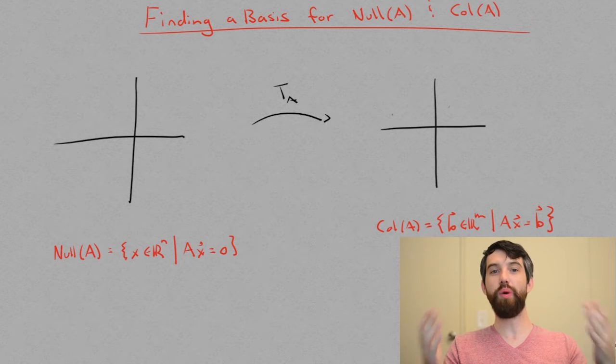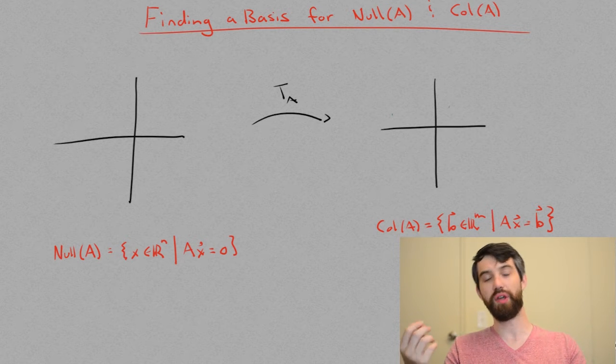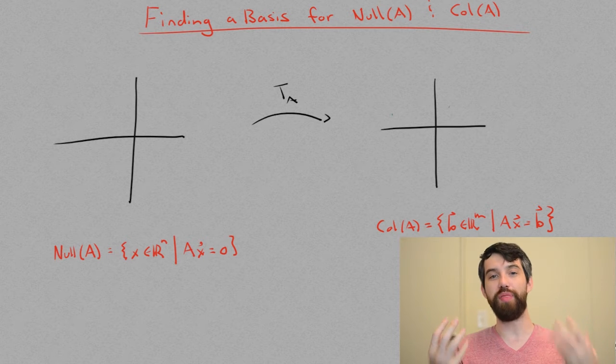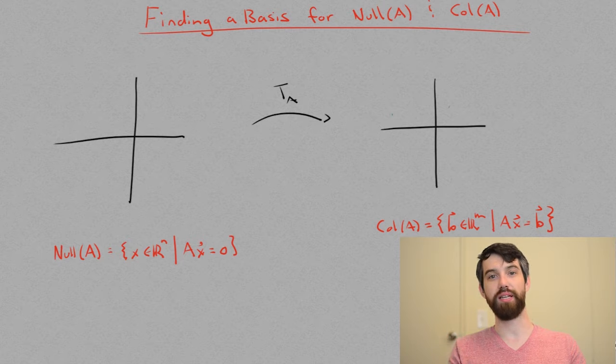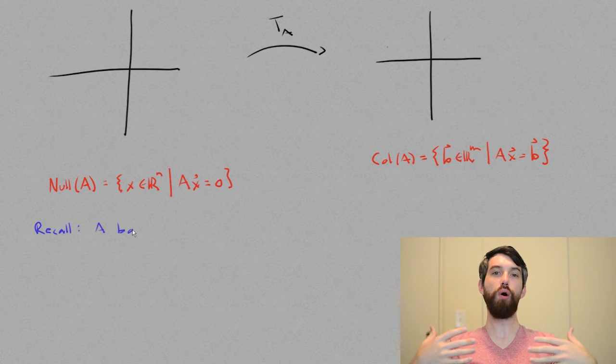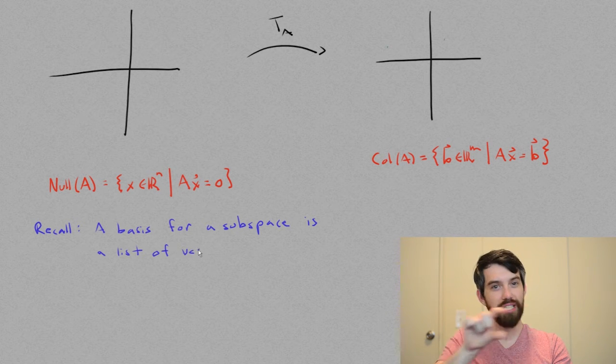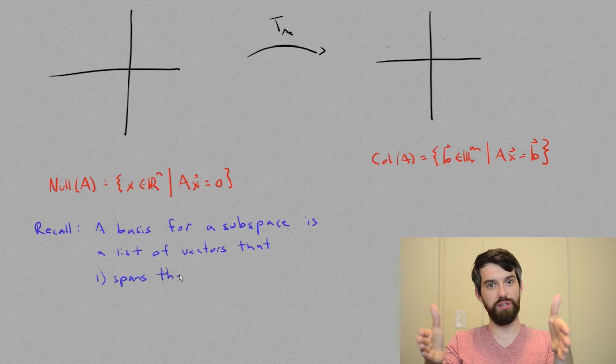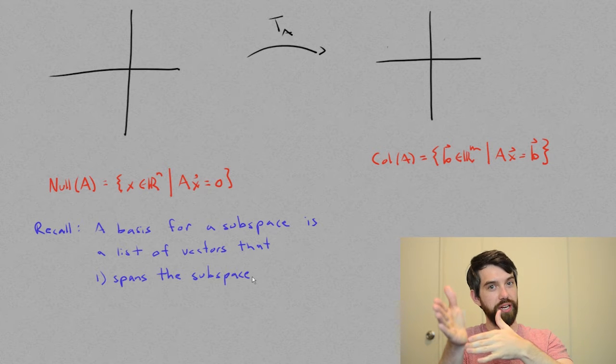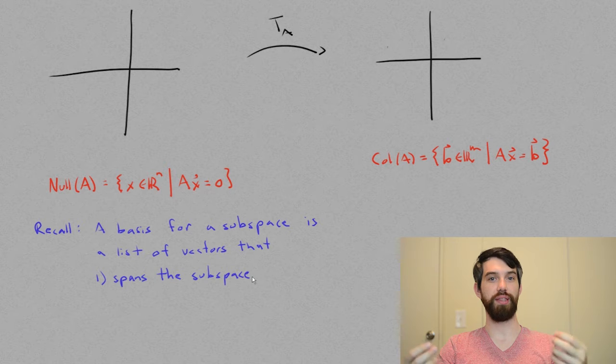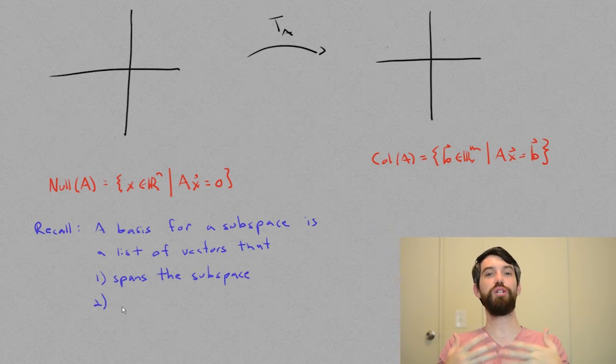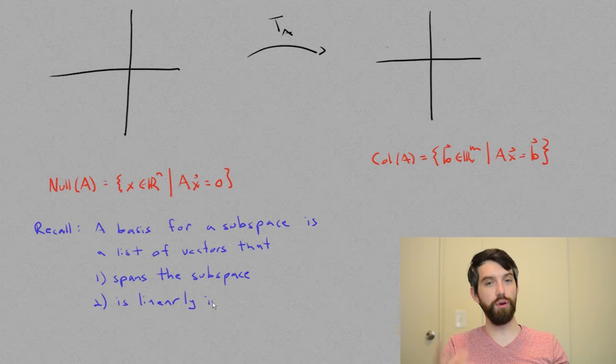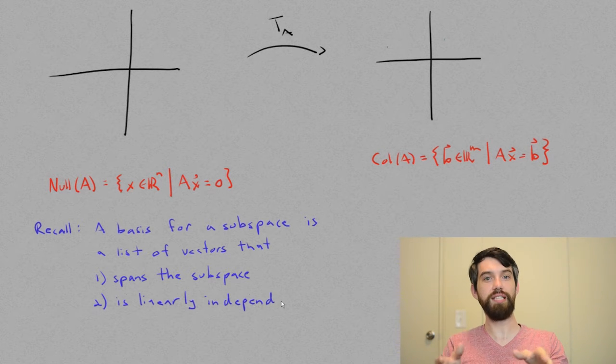Let's recall that a basis for a particular subspace is going to be some list of vectors that has two different properties. First, the span of that list of vectors generates the entire subspace. Secondly, we want to know that the list of vectors is linearly independent. When we have both of those things, the spanning of the subspace and the linear independence, our list of vectors is indeed going to be a basis.